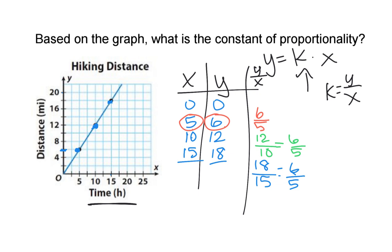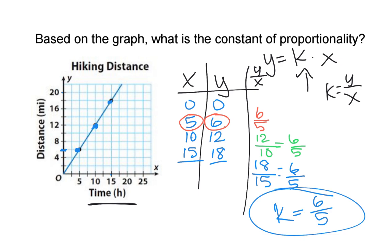If you think about it: five times six-fifths equals six. The difference here is that we're ending up with a constant of proportionality that is a rational number. So my k value in this case is six-fifths. If it's not clear what to multiply x by to get to y, the best suggestion is to create that y over x column in your table — it will help you calculate your constant of proportionality. Please let me know if you have any questions, and I hope you have a great day!